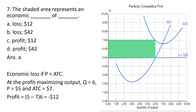Finally, question seven. The shaded area represents an economic blank of blank. At six units of output, average total cost is seven and the price is five, so this firm is making an economic loss. Average total cost exceeds price at the profit-maximizing output, which occurs where the marginal cost curve intersects the demand or marginal revenue curve. Profit per unit is minus two dollars — average total cost exceeds price by two dollars. Multiplying over six units gives an economic loss of twelve dollars.